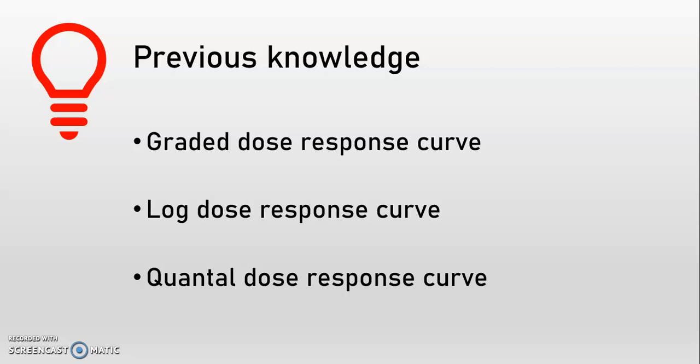However, there are many pharmacological effects which cannot be measured as a graded response on a continuous scale, e.g. measurement of acute toxicity of a drug. One can prefix the responses on an all-or-none basis. Such predetermined responses on an all-or-none basis are called controlled responses, and we plot a quantal dose-response curve.